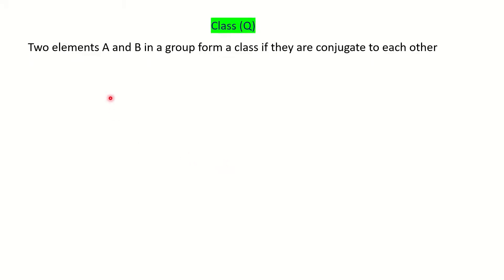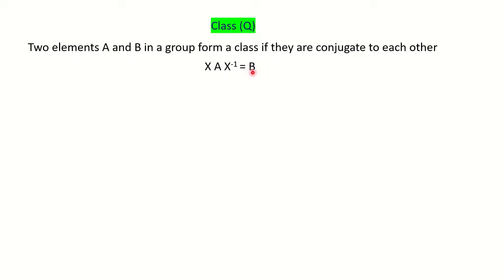We will see first what is a class. Two elements, let's say A and B of the group, form a class when they are conjugate to each other. X and X inverse are symmetry elements of the same group from which A and B are taken. On performing this similarity transformation operation, if we are getting the other element of the same group, then A and B form a class.